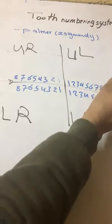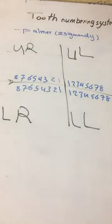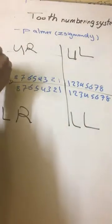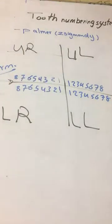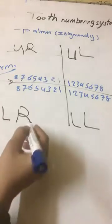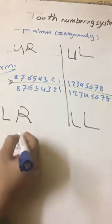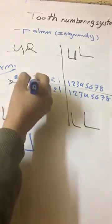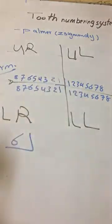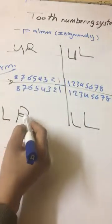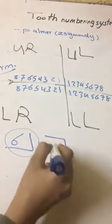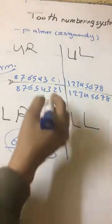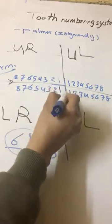This is for permanent teeth. For example, that sample here in that quadrant, it is right upper first molar. Another example, this one in that area, it's a right lower canine.